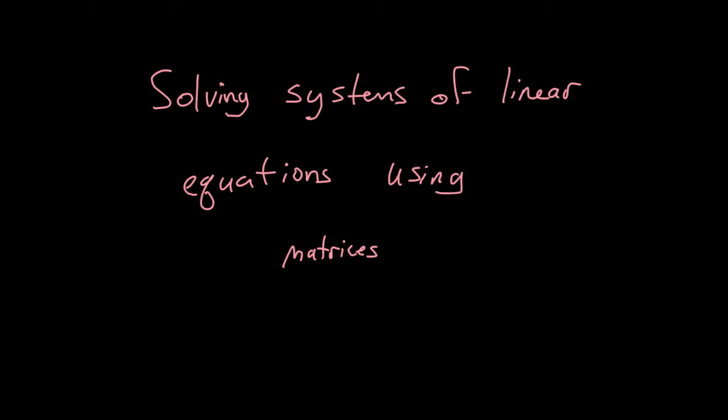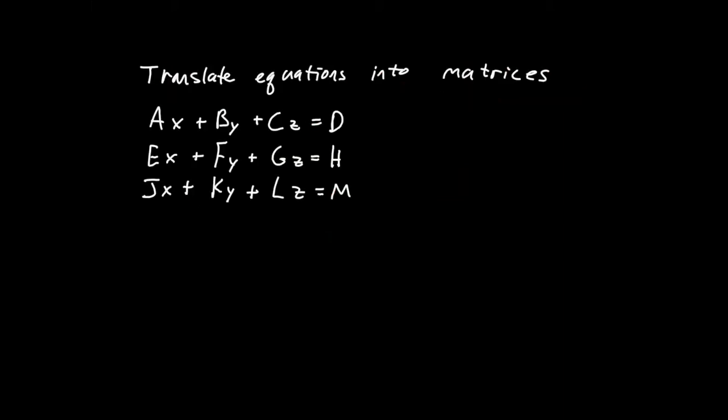This will be an overview of how to set up a problem like that with a couple of examples. Let's assume we'll have three equations with three unknowns. The process works for two equations with two unknowns or four equations with four unknowns — we can extend it to any number. The first thing we'll want to do is standardize the format: rearrange so that all the variables with their coefficients are on one side of the equation and any constant terms are on the other side.